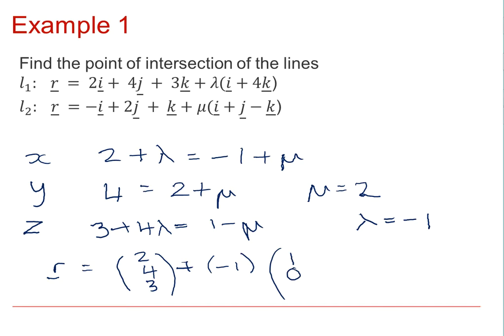and we have 1, 0, 4 as a direction vector, will get us to the point 1, 4, minus 1. You may wish to pause the video and use mu equals 2 as a substitution in L2 to check that you get the same point.